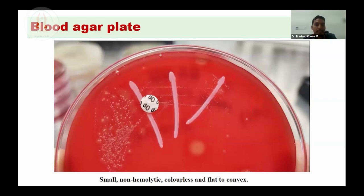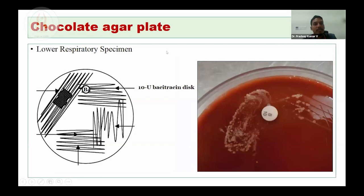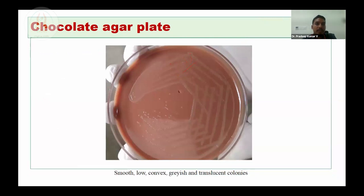Colony morphology: Haemophilus influenzae colonies are small, non-hemolytic, colorless, flat to convex. On chocolate agar, they are typically smooth, low, convex, grayish, and translucent. There is a typical wet cloth smell — also described as mouse nest odor or bleaching odor — which will be present. Once you get used to identifying these colonies, you will also note this typical odor when you open the plate. The satellitism test is performed by dividing the blood agar plate into two halves — one side plain streaking and the other side with a perpendicular streak of Staphylococcus aureus ATCC. Incubation for 20 to 24 hours at 35 to 37 degrees Celsius in 5% CO2.